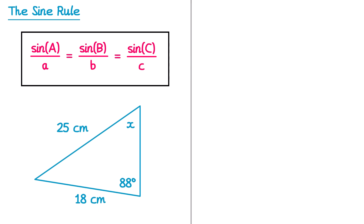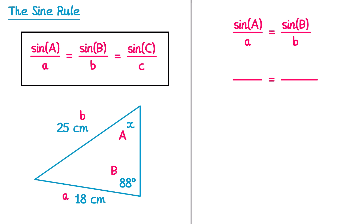In this question the angle is missing and labelled X. We label X as capital A since it's an angle, and the side opposite is lowercase a. The other angle given — 88° — is capital B, and the side opposite it — 25cm — is lowercase b. Substituting into the formula: sine of X over 18 equals sine of 88 over 25.